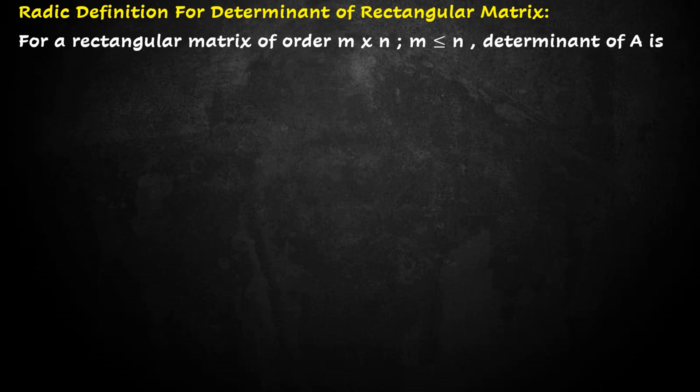Let us discuss the Rodić definition for determinant of rectangular matrix. We take a rectangular matrix of order m cross n, where m is less or equal to n. Then the determinant of A is defined as: